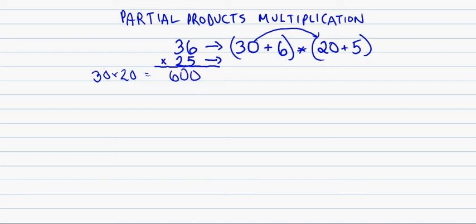We're going to take the 30 and multiply it by the 20, and that gets us 600. We're going to take the 30 then, multiply it by the other number in that group, 30 times 5 is 150. We're going to take the 6 and multiply it by each of the numbers then too. So we'll have 6 times 20, and we'll have 6 times 5.